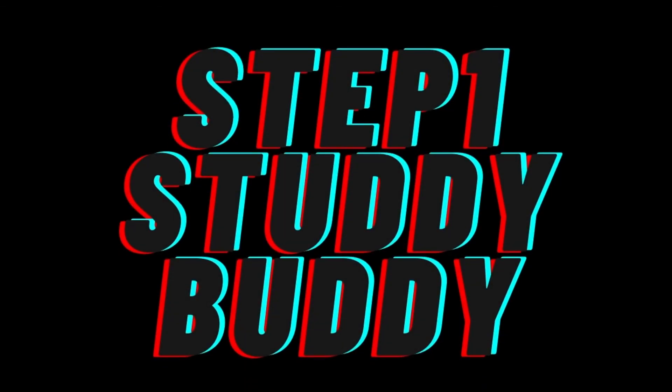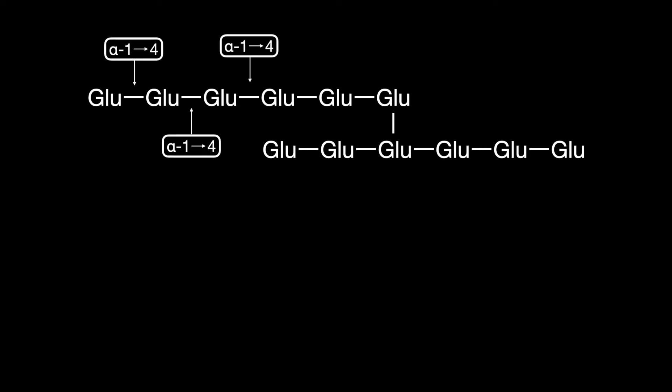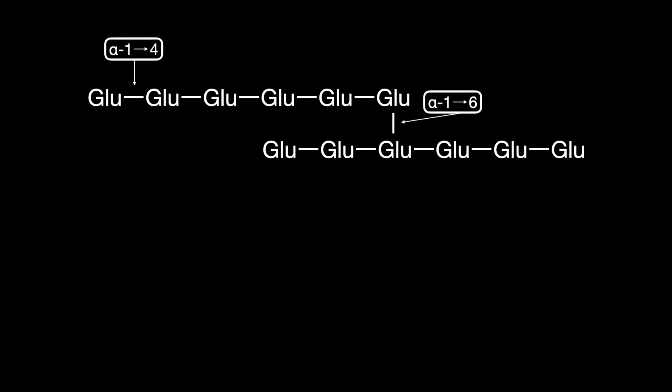Welcome to the Step 1 Review Study Guide. In this lesson, we learn about glycogen. Glycogen is composed of glucose molecules linked to each other via alpha-1,4 bonds, and every now and then there are branches formed by alpha-1,6 bonds.